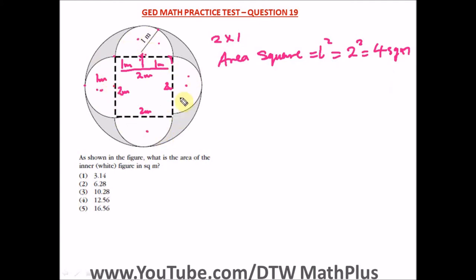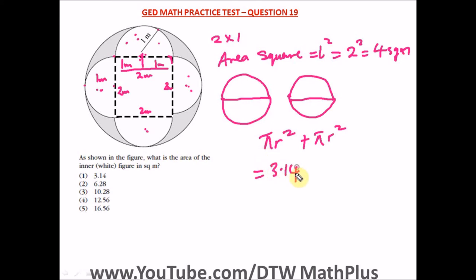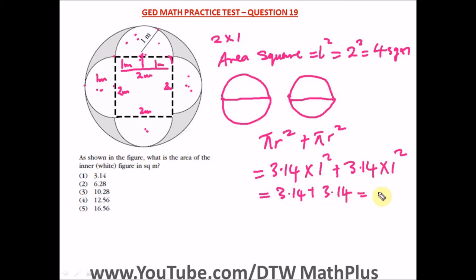We have four semicircles total. If you join two semicircles together, you get one full circle. So the four semicircles form two circles. The area of a circle is π r². For two circles that is π r² + π r². Using π = 3.14 and r = 1, each circle's area is 3.14 × 1² = 3.14, so two circles give us 3.14 + 3.14.